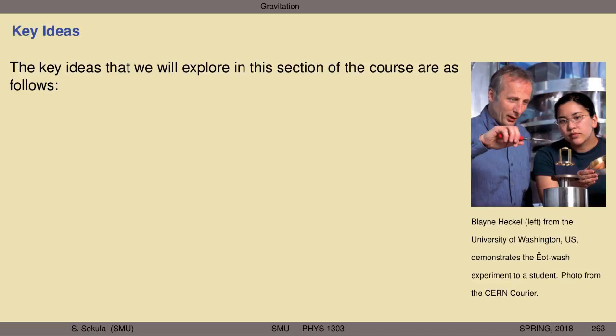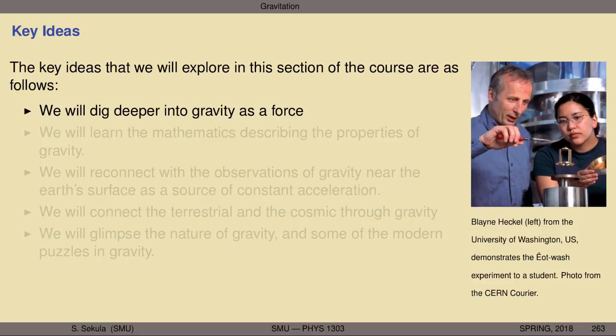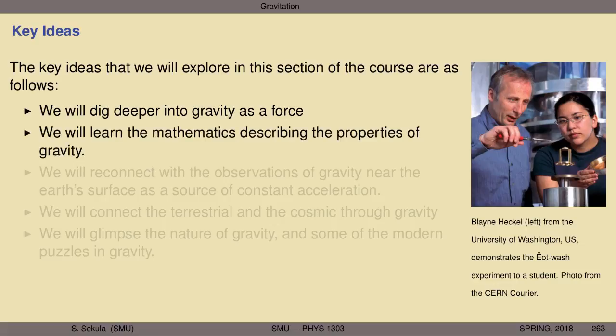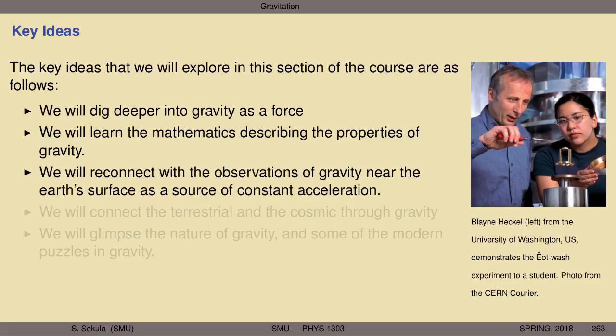The key ideas we will explore are as follows. We will dig deeper into gravity as a force. We've taken a shallow look at it before — we've considered what it means to add energy into the configuration of an object near the surface of the Earth, or take that energy back and convert it into kinetic energy. We've thought about falling in the presence of a constant acceleration due to gravity, but now we're going to understand where all of those things come from. To do that, we need to learn the mathematics that describes the properties of gravity, but we are merely recycling the force, Newton's laws, and energy concepts we have already exercised. We will reconnect with the observations of gravity near the Earth's surface as a source of constant acceleration and finally come to understand why that is.